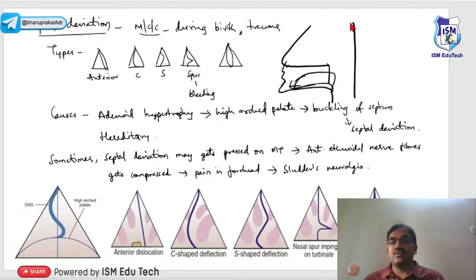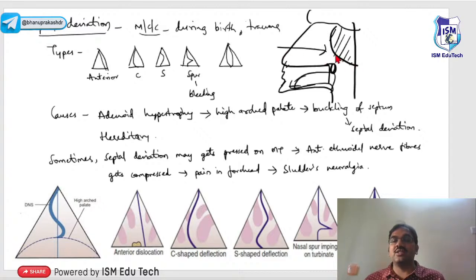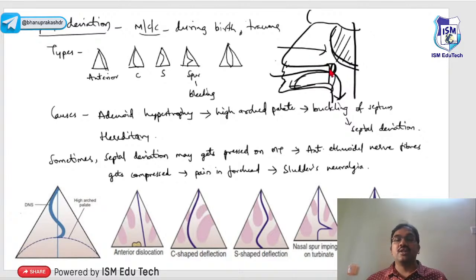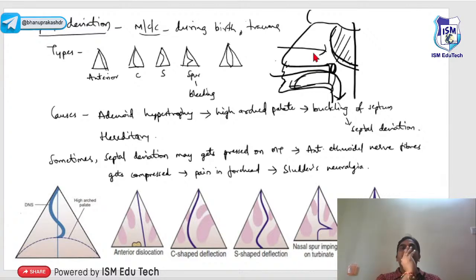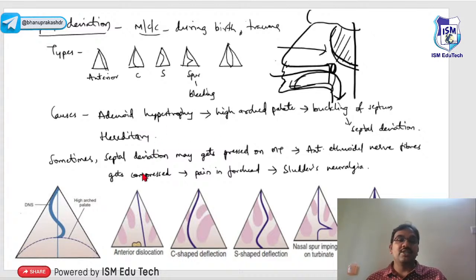In adenoid hypertrophy, the enlarged adenoid impedes airflow through the nasal passage and the child breathes through the mouth. With prolonged mouth breathing, the palate gets pushed up and curves, causing the septum above to buckle to one side, producing septal deviation with nasal block on that side.